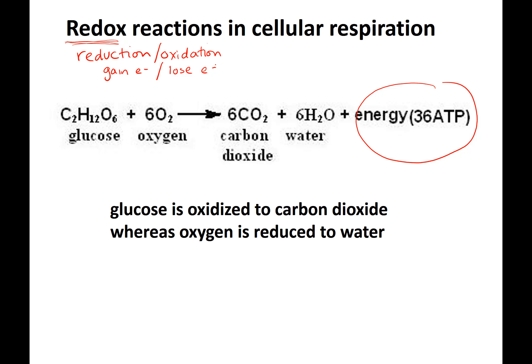The source of these electrons is the food you eat. We're going to see how glucose is broken down to make electron carriers. Glucose is oxidized, which means it loses electrons, to eventually make carbon dioxide. And oxygen is reduced, which means it gains electrons and is eventually reduced to water. It's really important for you to go watch the video on redox reactions and understand this movement of electrons.